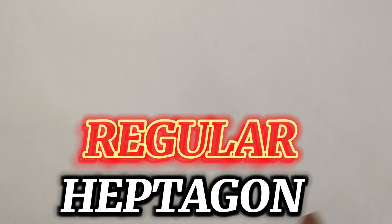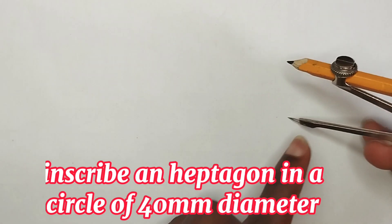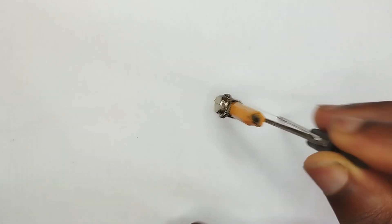In this video we have been asked to inscribe a heptagon in a circle of radius 40mm. I'm going to pick my compass with radius of 40mm, place it at any point on my drawing paper and draw my circle first.